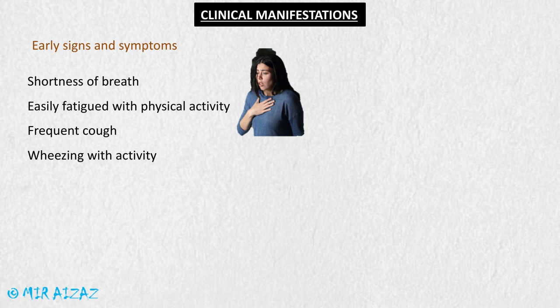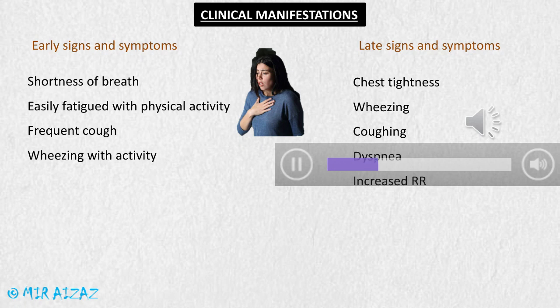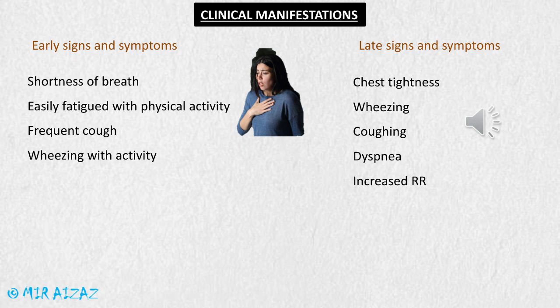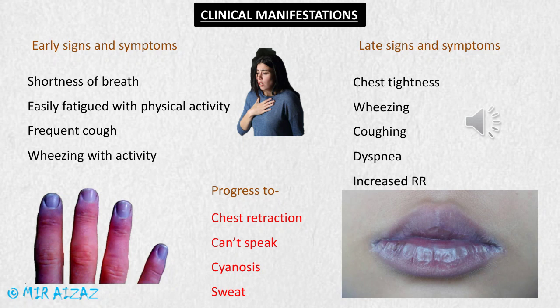If these early signs and symptoms are not controlled, late signs and symptoms may start, including chest tightness, wheezing — a high-pitched whistling sound — continuous coughing due to excess mucus, dyspnea, and increased respiratory rate in an attempt to get in enough oxygen. If late signs are not controlled promptly, they can progress to more severe signs and symptoms including chest retraction.